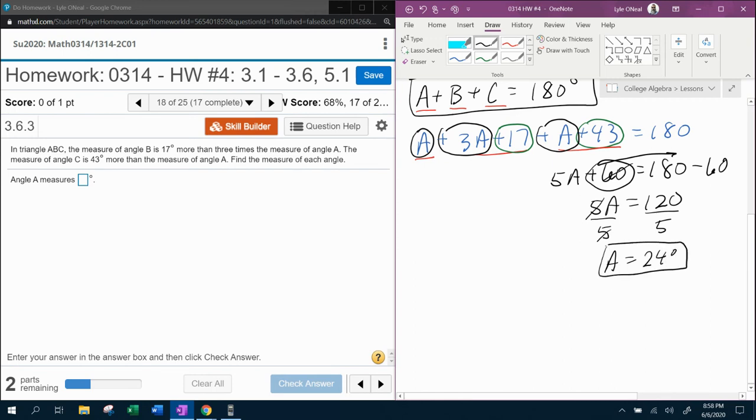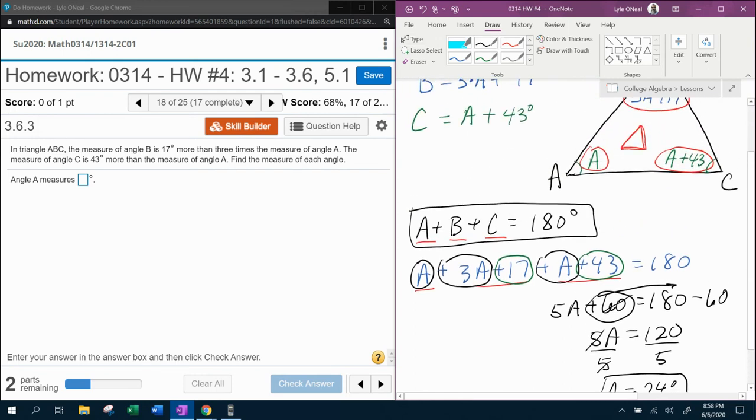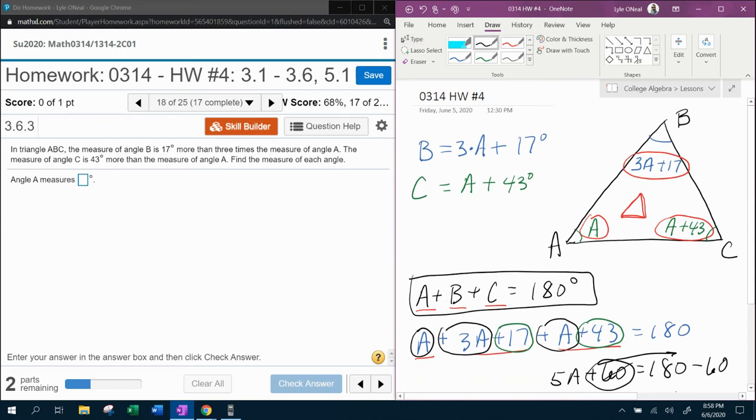So the measure of angle A is 24 degrees. And so if I come up here to my picture, I know that A is 24 degrees. So if I know angle A, can I get angle B?